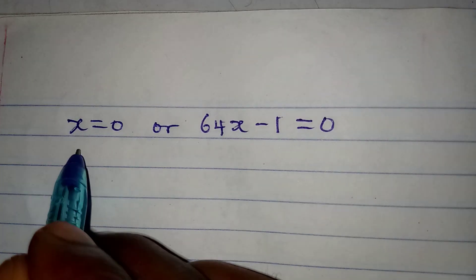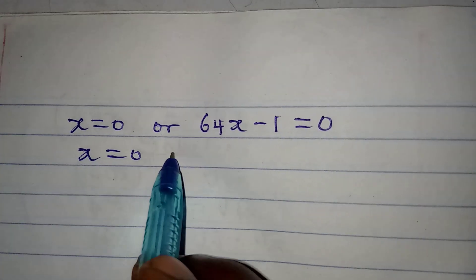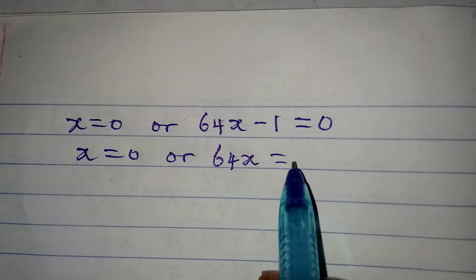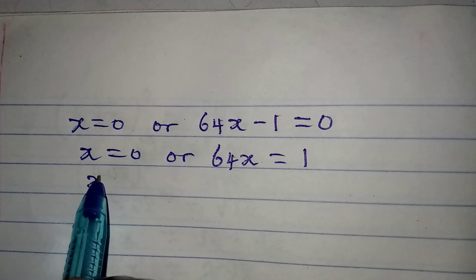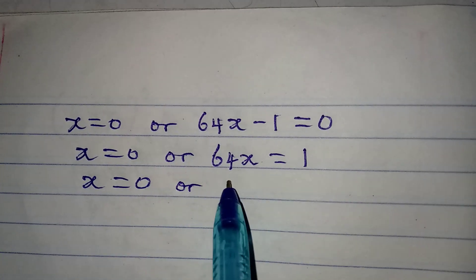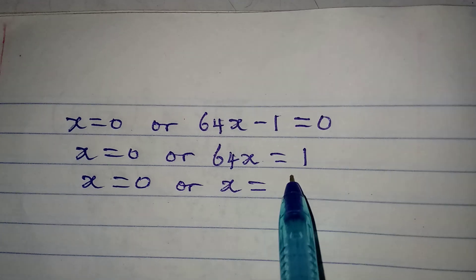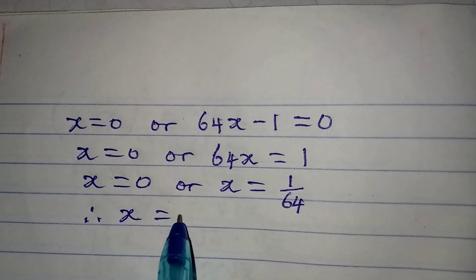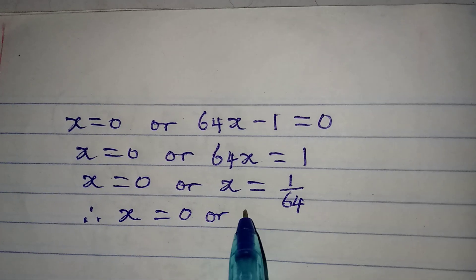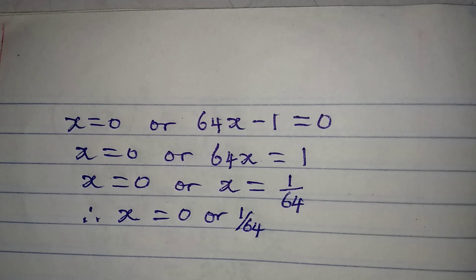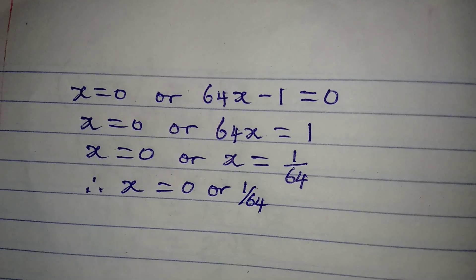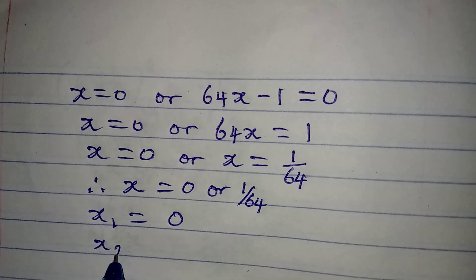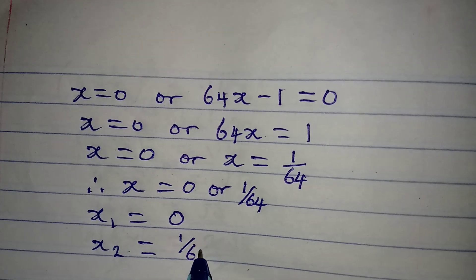From x equals 0, the first solution stays as x equals 0. From 64x minus 1 equals 0, we get 64x equals 1, so x equals 1 over 64. Therefore we have two solutions: x₁ equals 0 and x₂ equals 1 over 64.